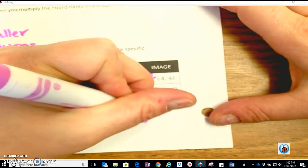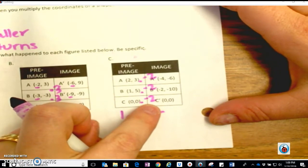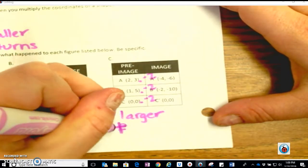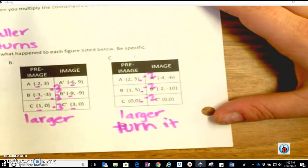But what happened when we multiply by negative 2 here, it got larger. It definitely got larger because of that multiplying by 2, it wasn't a fraction, but that negative sign is going to turn it.